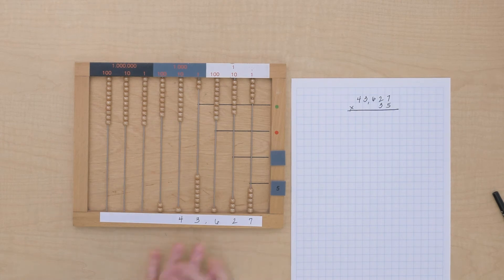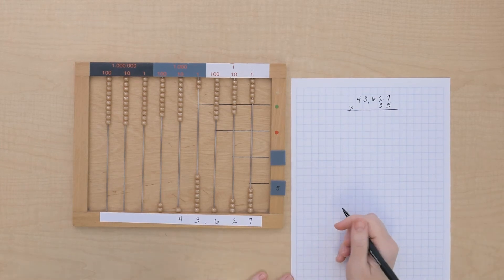Now, before we go on, I want to write the product that we got with our units multiplier. This partial product.